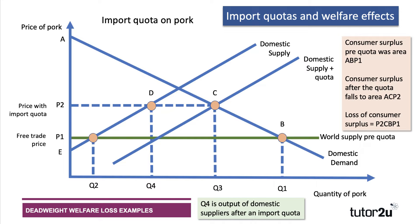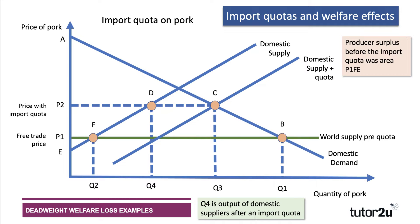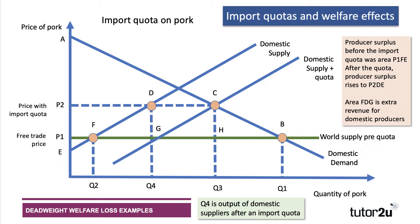Some of that loss of consumer surplus goes to producers. Producer surplus before the import quota was area P1, F, E. After the quota, output has risen to Q4, so producer surplus is now area P2, D, E — an increase. Area F, D, G is extra revenue for producers because they're now supplying more to the market at the higher price. That area was previously consumer surplus, so effectively it's a transfer to domestic producers.